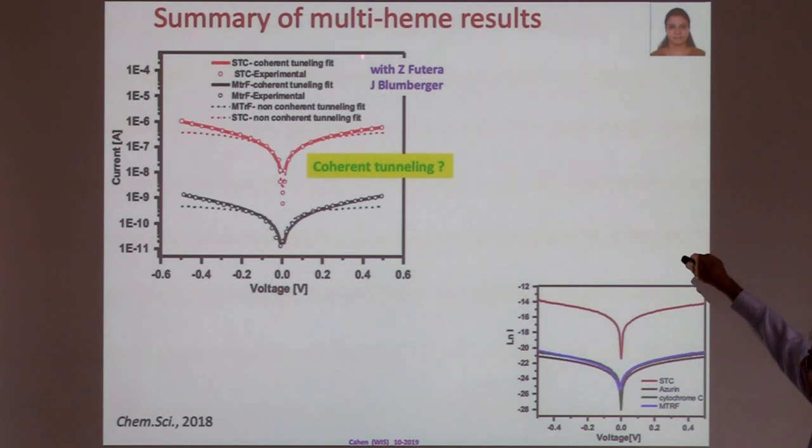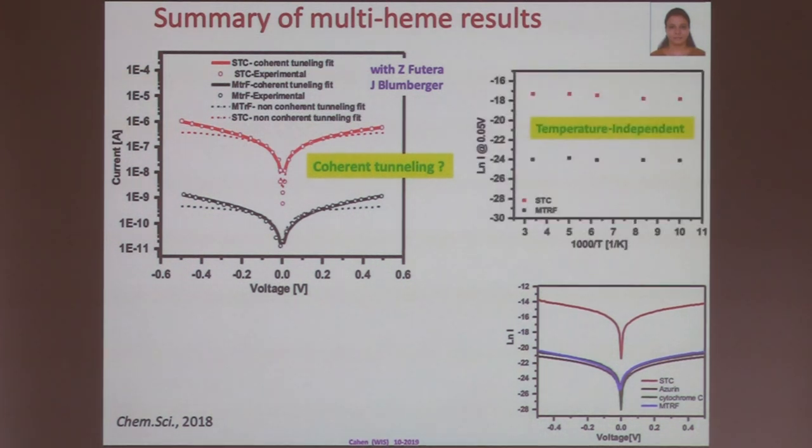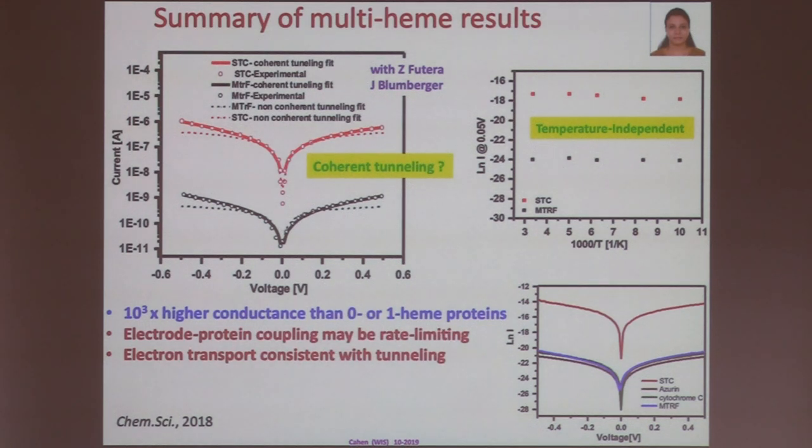So the summary of the multi-heme results are that we have these curves, which then were modeled by Zdenek, Zdenek, and Jochen, with various models. And it was found that a coherent tunneling model fits best. Now, this is the best we can do at this point, because I have no idea how to measure coherency. Is it really coherent or not? I'm not sure that at this point we can answer, except by using models to suggest experiments and do that. By the way, they're temperature-independent, both of them. Also, the 5.3 nanometer one. So, this is a summary of these heme proteins. And the electroprotein coupling may well be rate-limiting. The proteins themselves may be better conductors than we can measure. And the transport is consistent with tunneling.